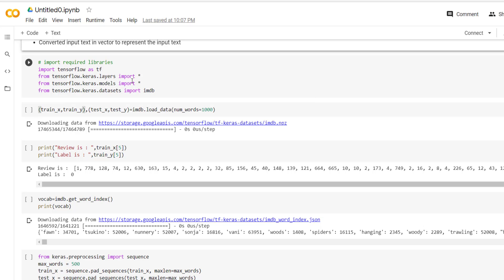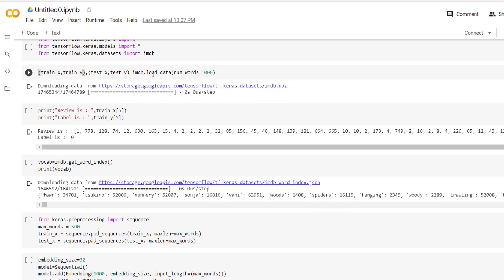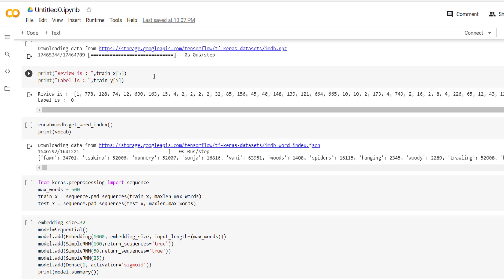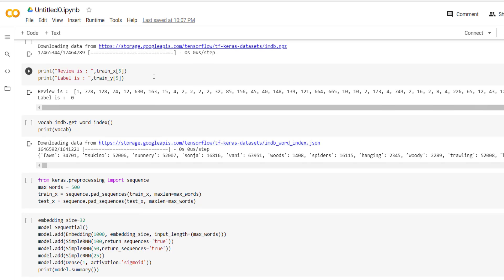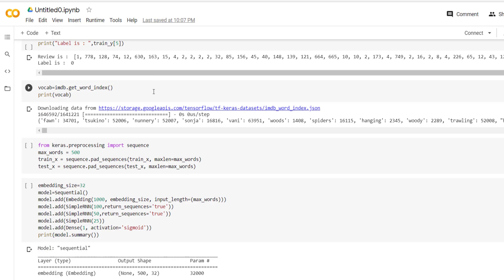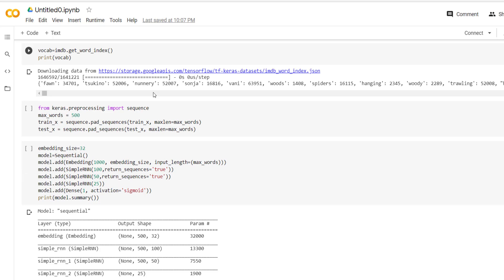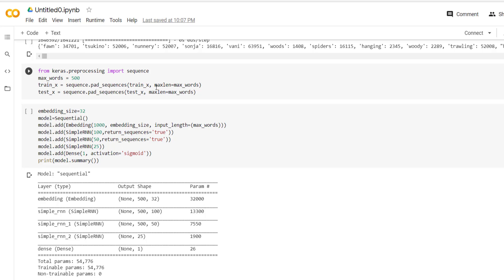We have imported required libraries. Then we have loaded IMDB dataset with the help of load underscore data method. After that we have printed fifth review along with its true label associated with it. We have also printed the vocabulary that is learned already by IMDB. Then we have performed padding operation. So if review length is less than 500 we have padded those reviews with the help of 0.